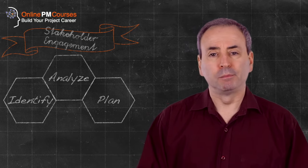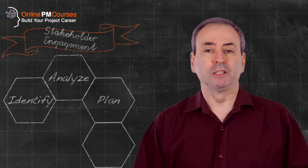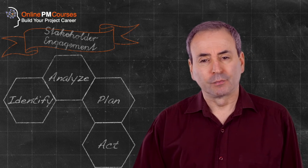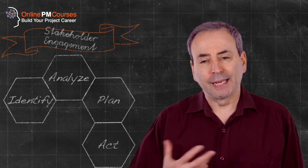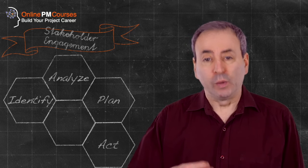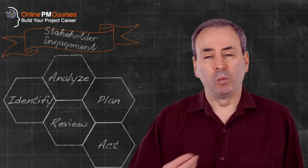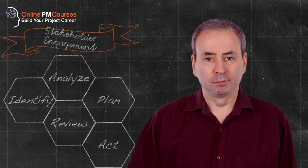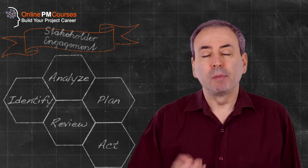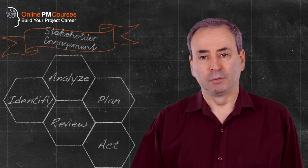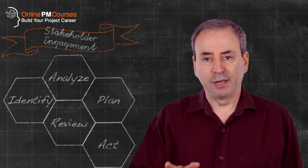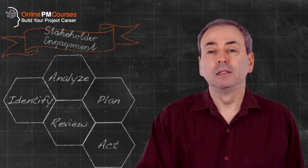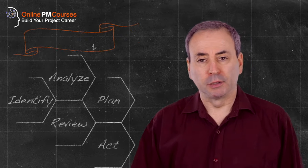And having built a plan, step four is obvious — we put our plan into action. And having done that, we then need to review what we're learning and the influence we're having over our stakeholders. So the basic process is very simple: identify, analyse, plan, act, and review — bringing us back to the start.